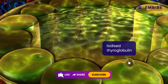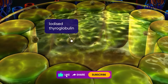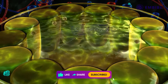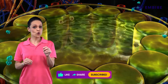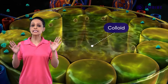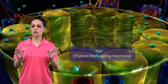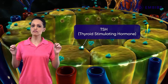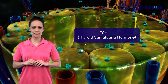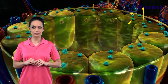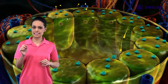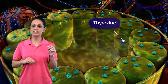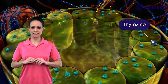This iodized thyroglobulin is transported into the central cavity, where it is stored as colloid until thyroid stimulating hormone, or TSH, targets the follicle cells. In response to the TSH, the colloid cleaves to form and release thyroxin.